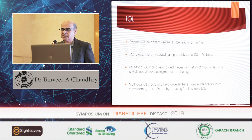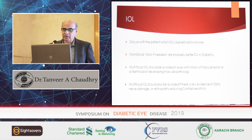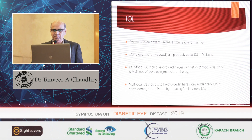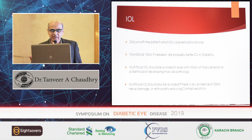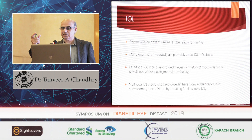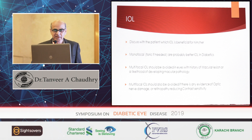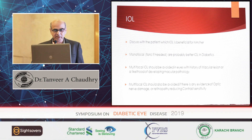Choice of IOL — monofocal or toric if needed, these are the better IOLs. Multifocal IOLs are available but I feel they should be avoided in any patient with macular disease or likely to develop macular pathology. Wherever there are maculopathies, don't use multifocal lenses as they will induce further maculopathy and some optic nerve issues as well. Multifocal lenses reduce contrast sensitivity, so try to avoid them if vision is already reduced or the optic nerve is affected.